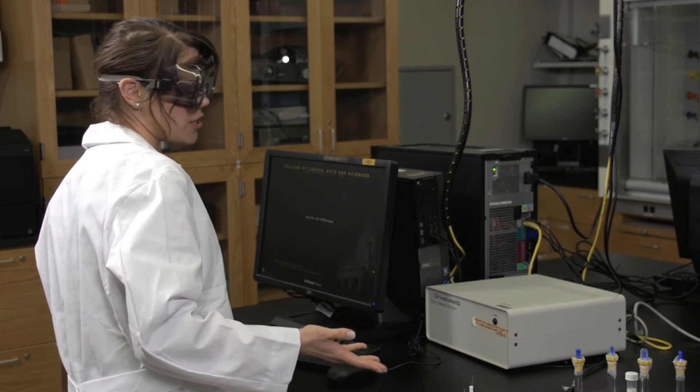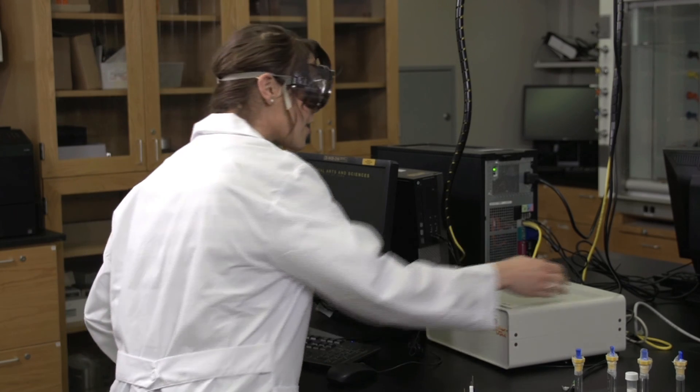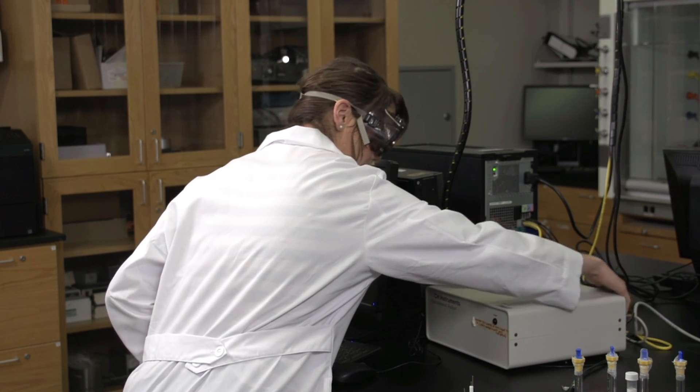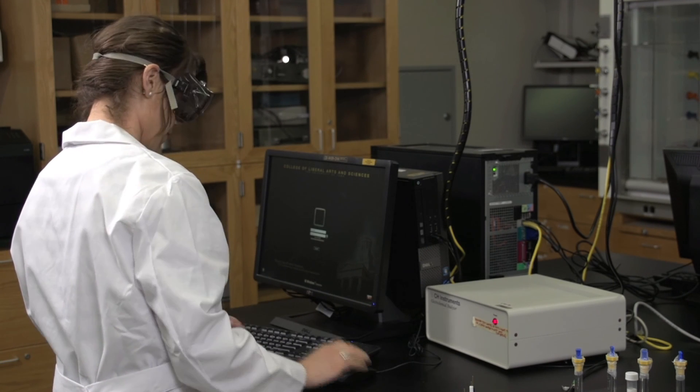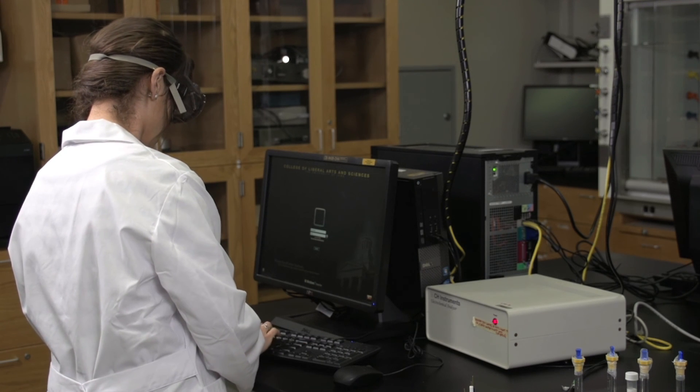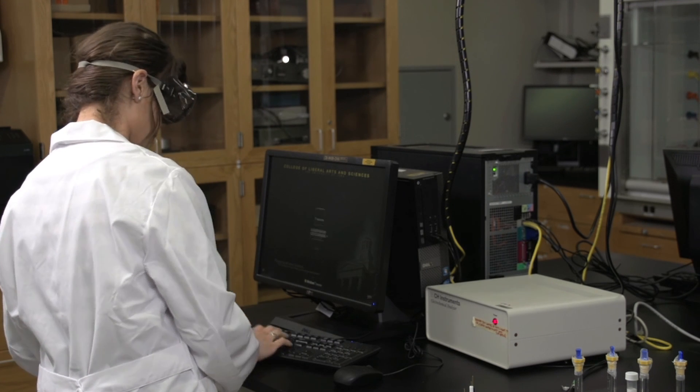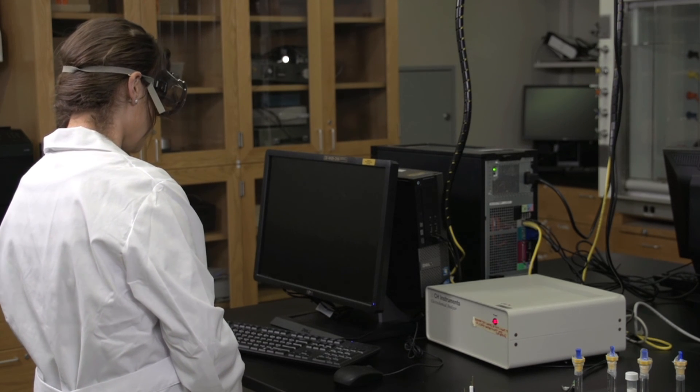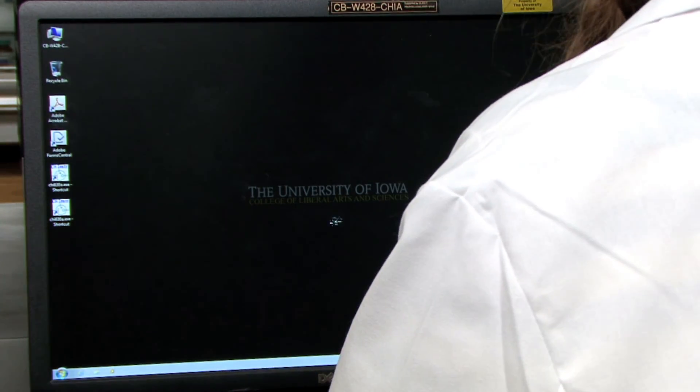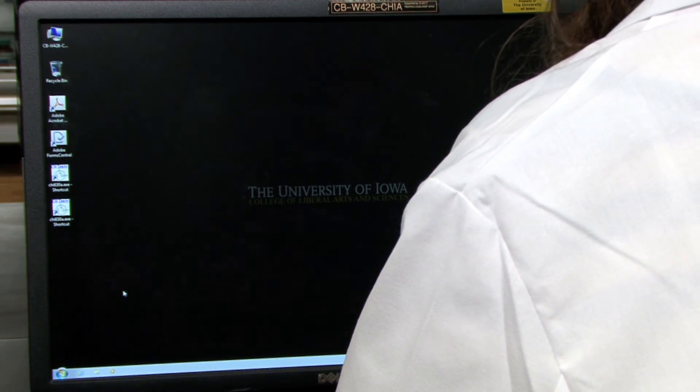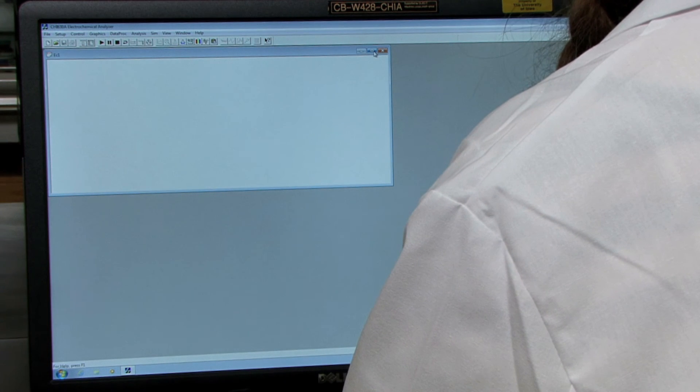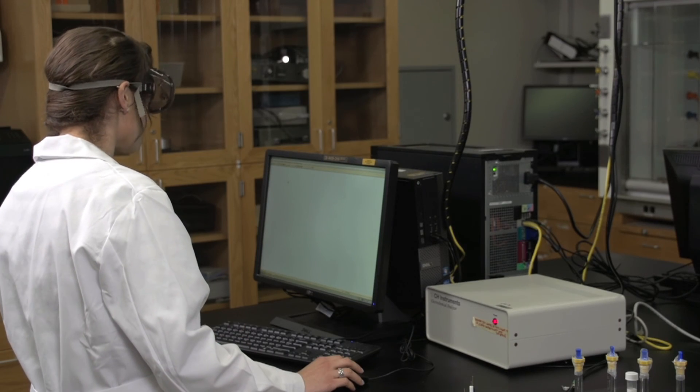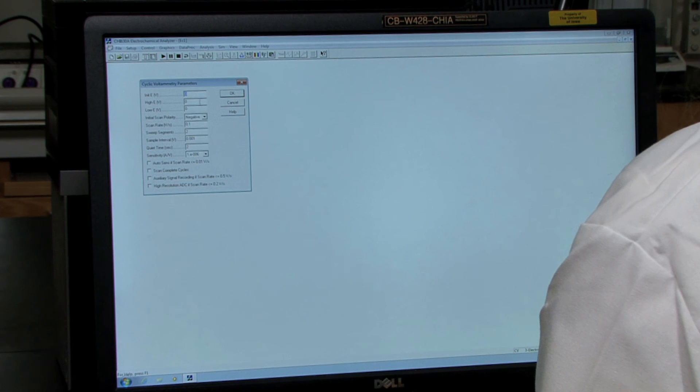When your solution is finished purging, you can turn on the instrument and log into the computer. To turn on the instrument, there's just a switch at the back and the power light will turn on. Once you're logged in, you want to hit the CHI 630 icon which will open up the software. Maximize both windows. To open the parameters window, click on the icon that says parameters, and this will open up the parameters for the experiment.